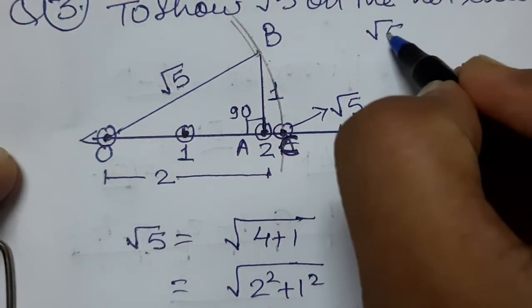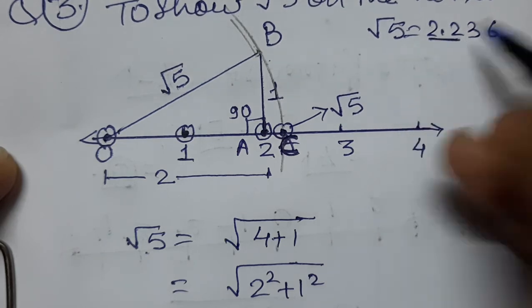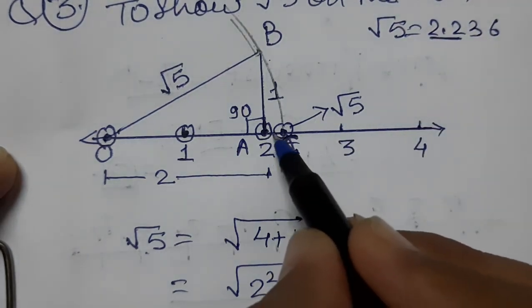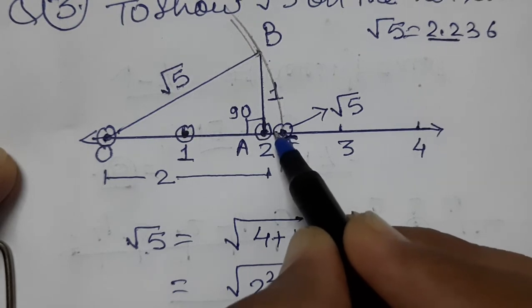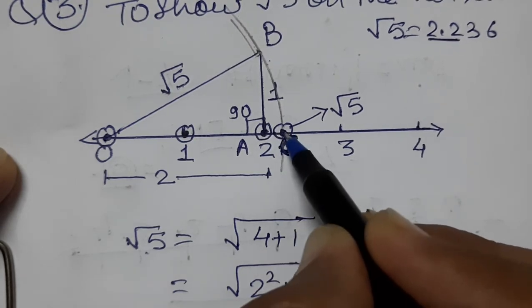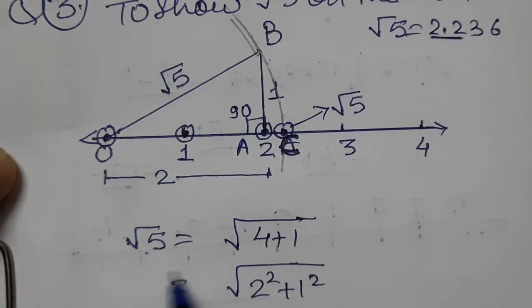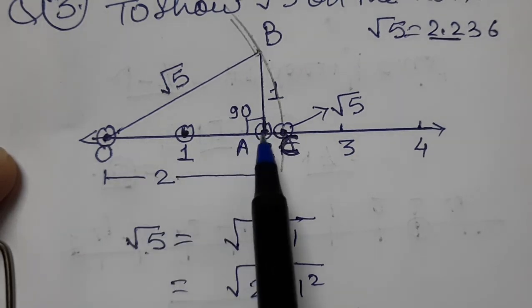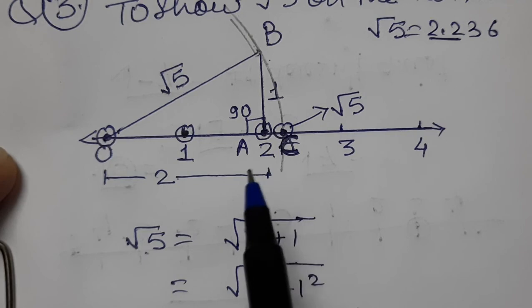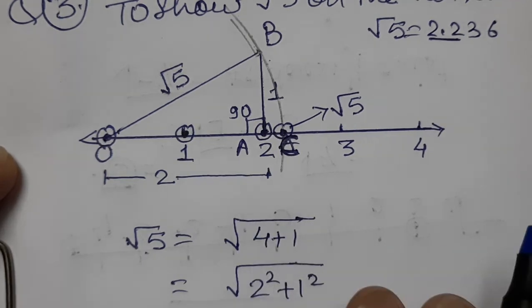This point C represents √5 on the number line. √5 is approximately 2.236, so it should be around 2.2 cm from origin. You can see it falls near 2.2 on the number line. Clear, children — practice this and it will become easy.